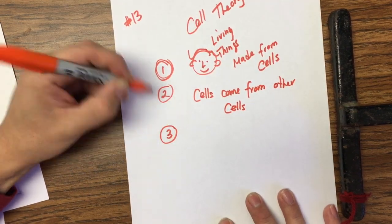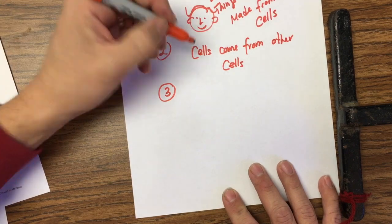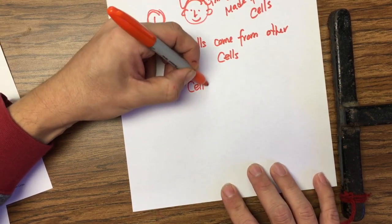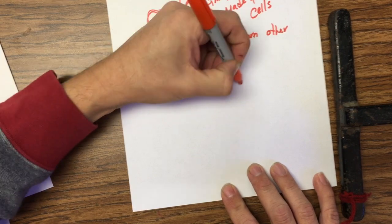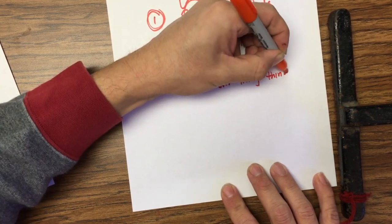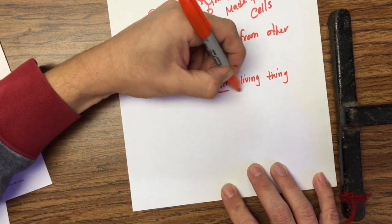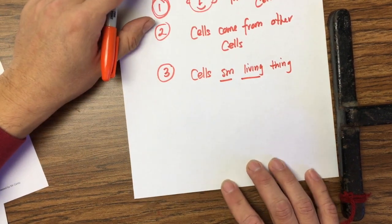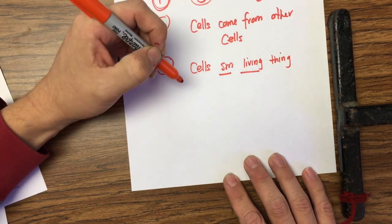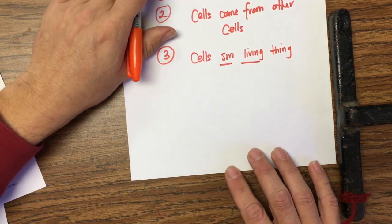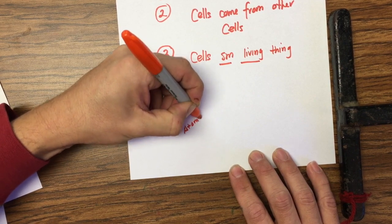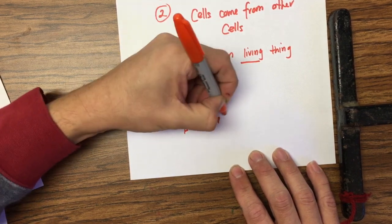Number three: cells are the smallest living things. Obviously there are smaller things than cells, but cells are the smallest living things. How do we get to a cell? We have atoms, and atoms come together to form molecules.